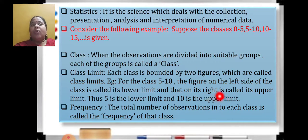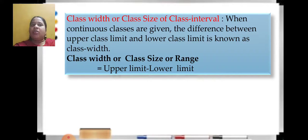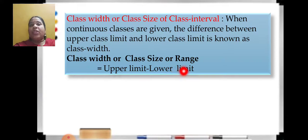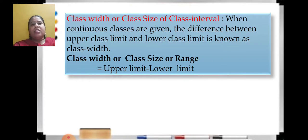So the total number of observations in each class is called frequency. Now, an important formula about class width, class size, or class interval — this is also called range. The difference between the upper class limit and the lower class limit is called class width. Please make a note: class width or class size or range is upper limit minus lower limit.